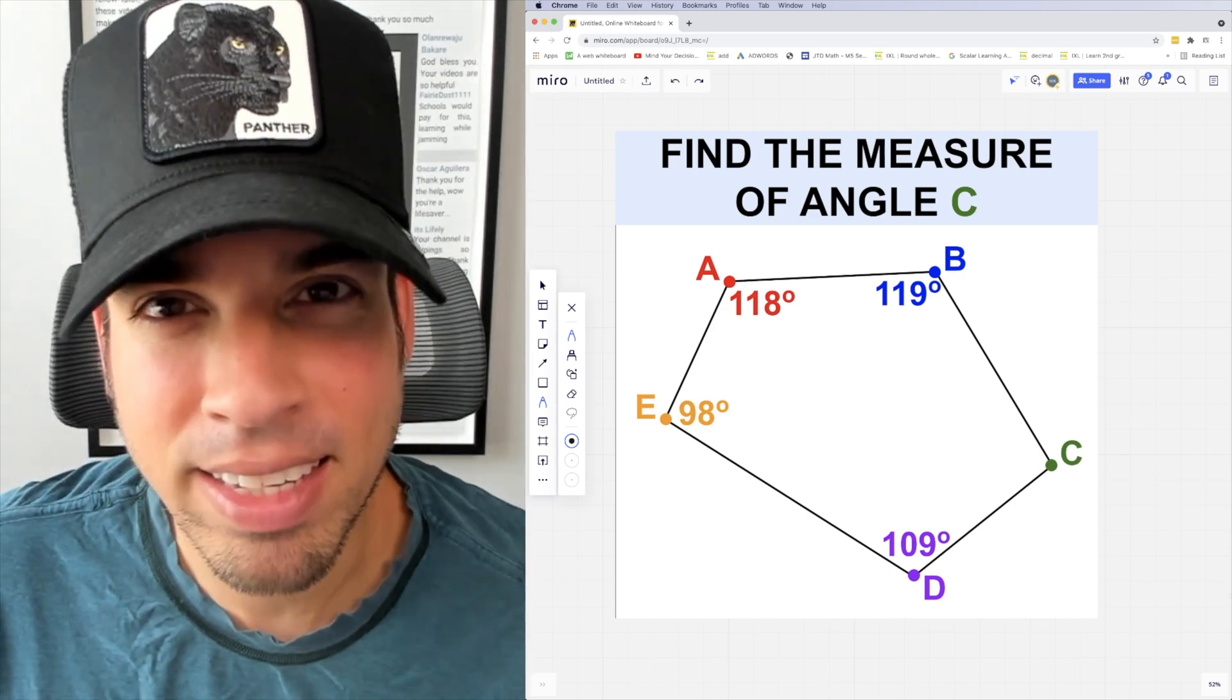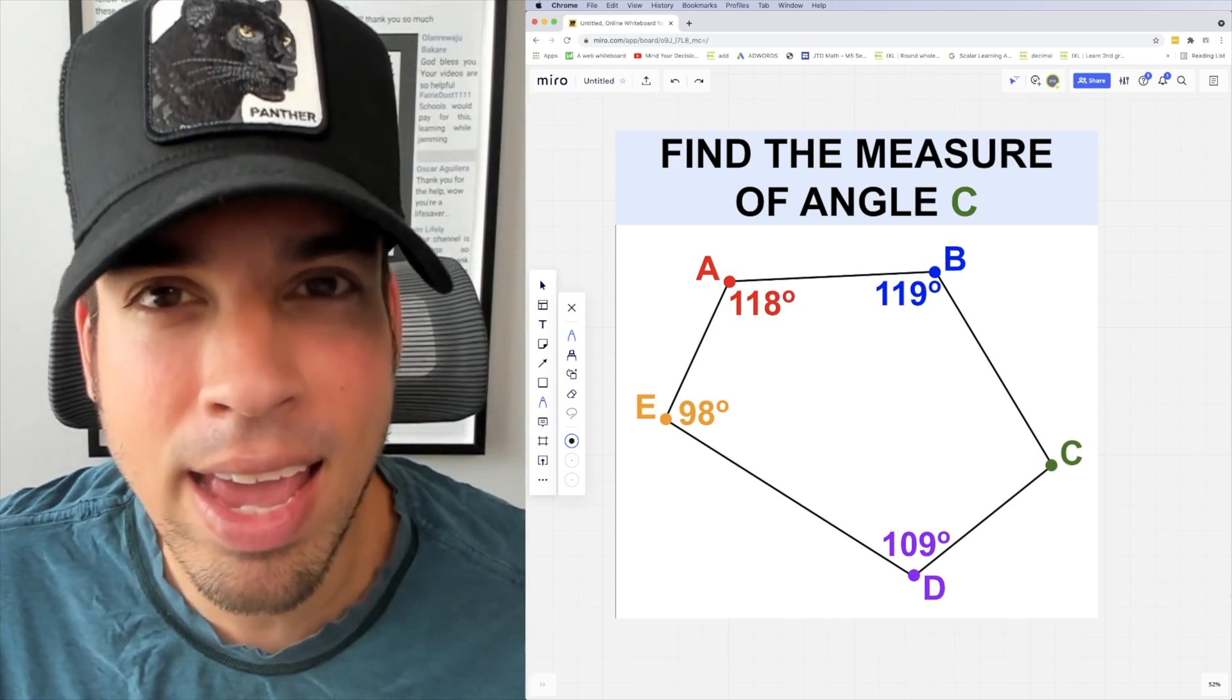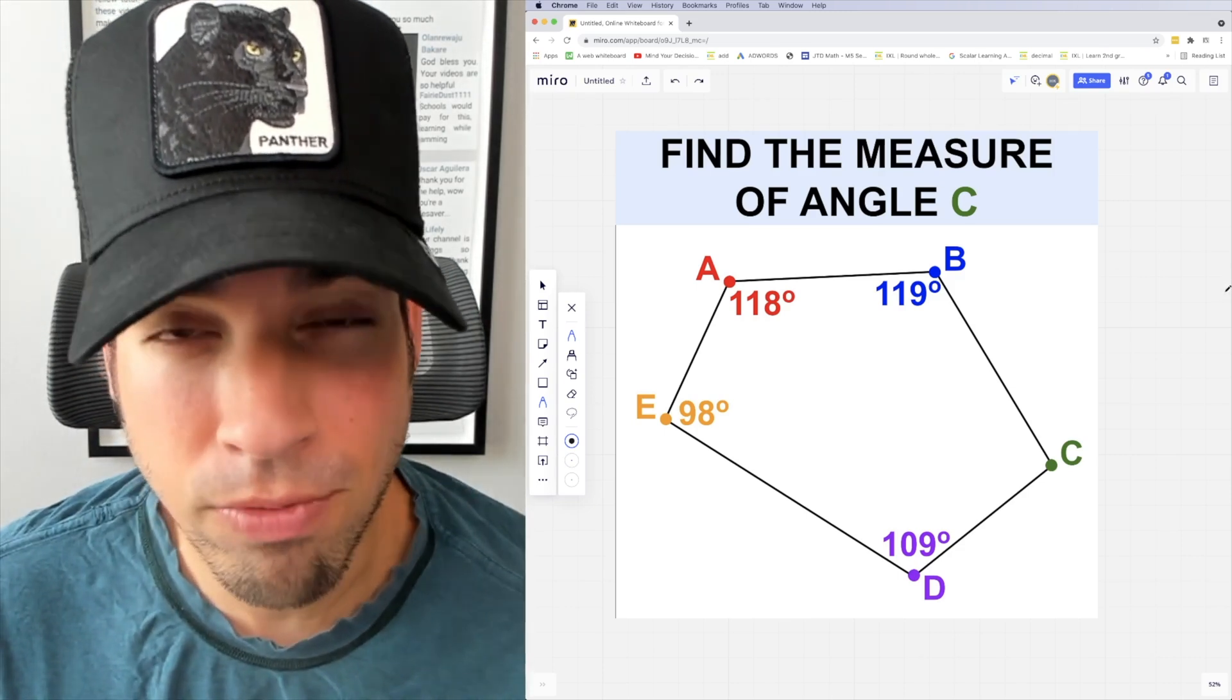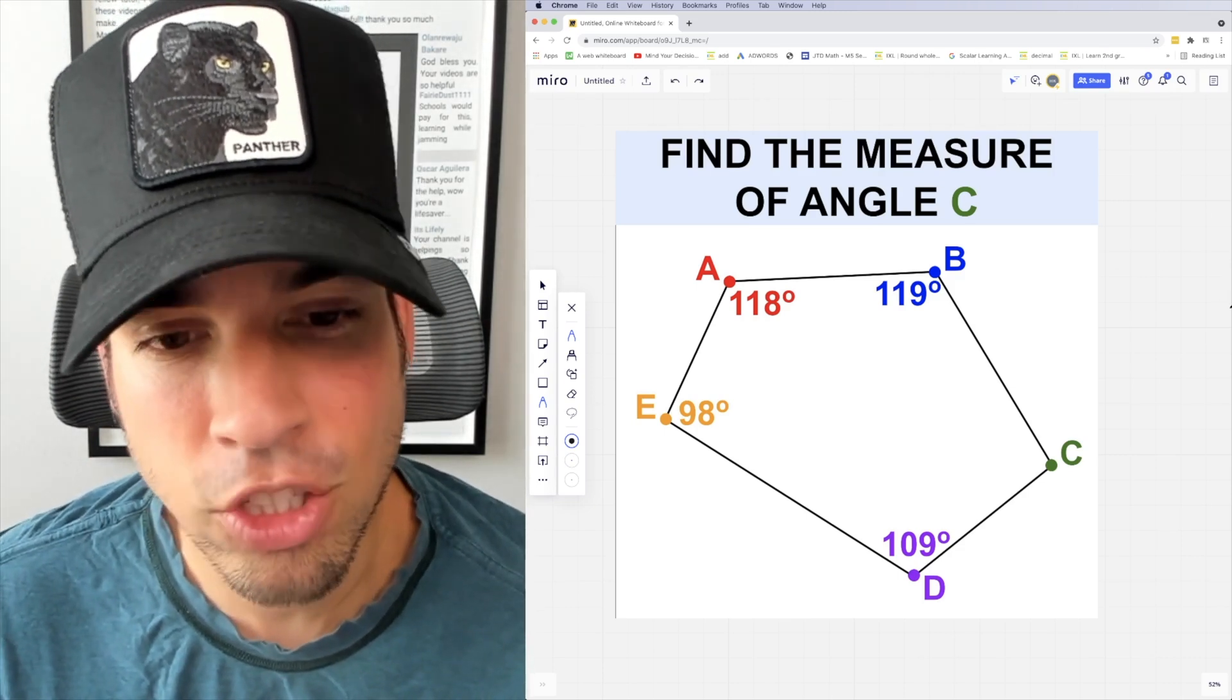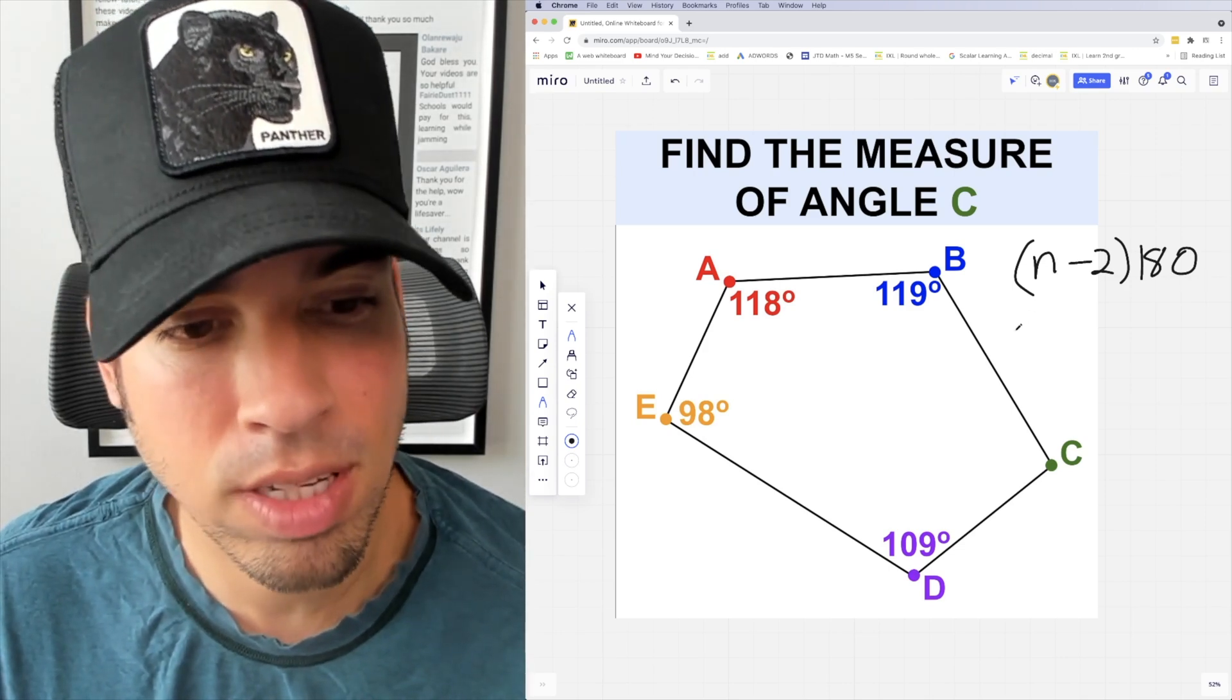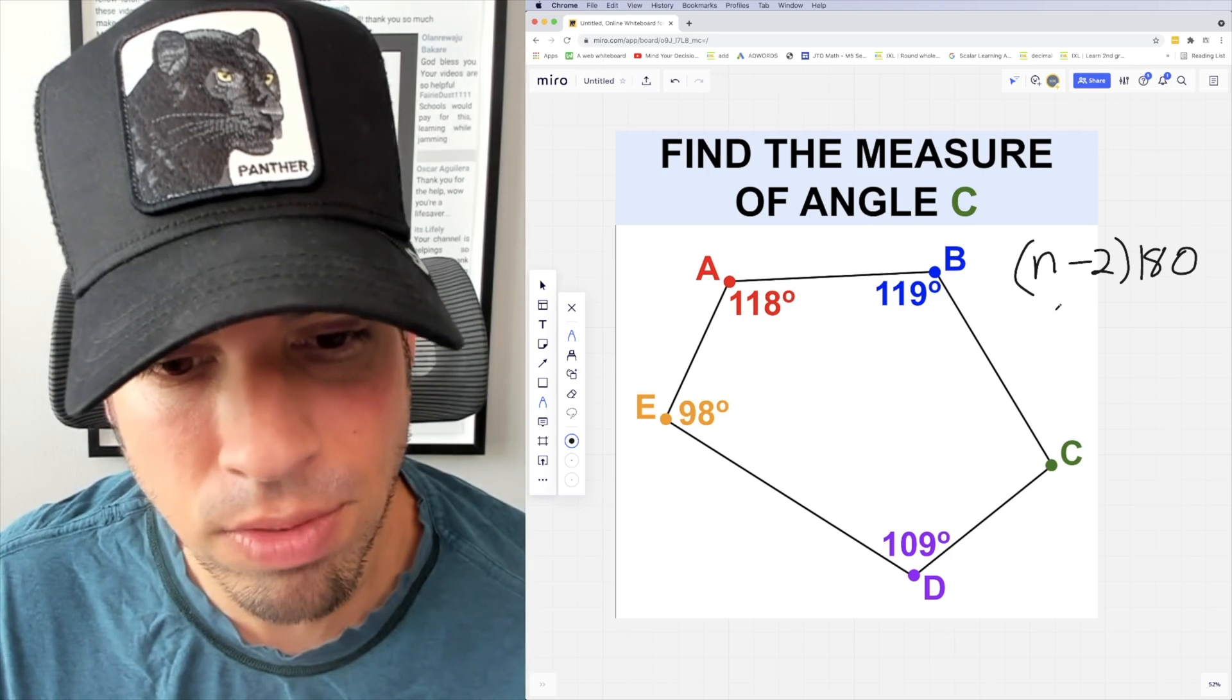In order to solve a geometry problem like this, it's important to know what the angle sum is for a pentagon. Now, if you don't have this memorized, there's a formula that you can use to make this calculation. The formula is n minus 2 times 180, where n is the number of sides of the polygon. So in this case, it's 5.